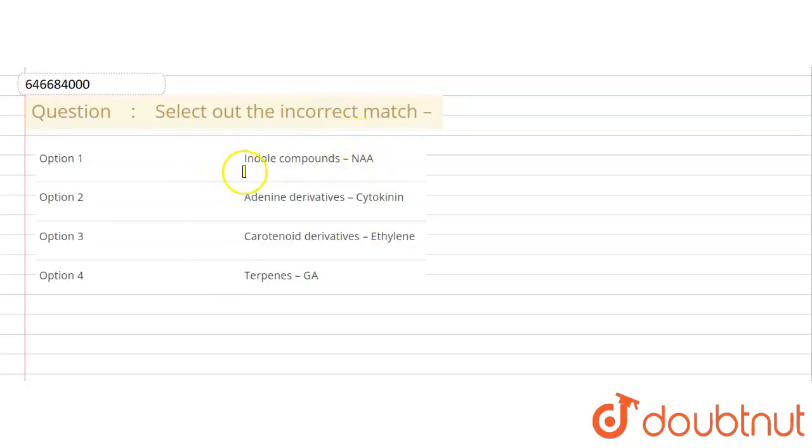In option 1, indole compound NAA; option 2, adenine derivative cytokinin; option 3, carotenoid derivative ethylene; and option 4, terpene derivative gibberellic acid. Now we have to identify the incorrect match.